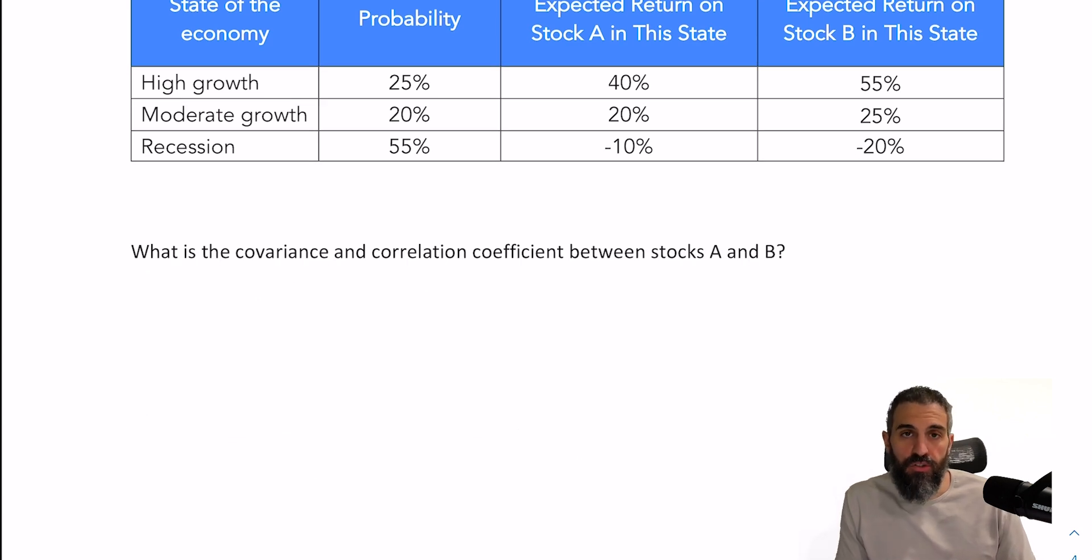Now for the covariance and the correlation coefficient, we're going to use the covariance formula to begin. So we'll take the first probability of 0.25, multiply by stock A's return, which is 40, minus the expected return of 8.5. And then we'll multiply that by the exact same thing, but for stock B, because for the covariance, we're trying to measure how they move in relation to each other. So I'll take 55, which is stock B's return, minus 7.8, and I'll repeat that for each state.